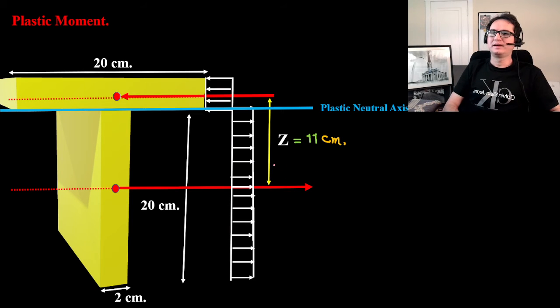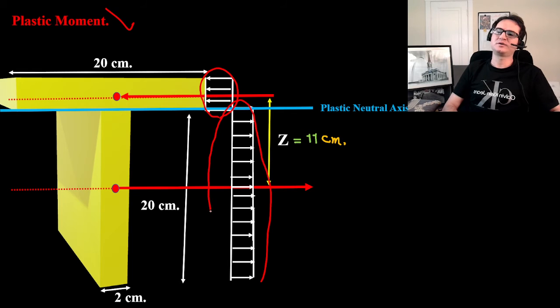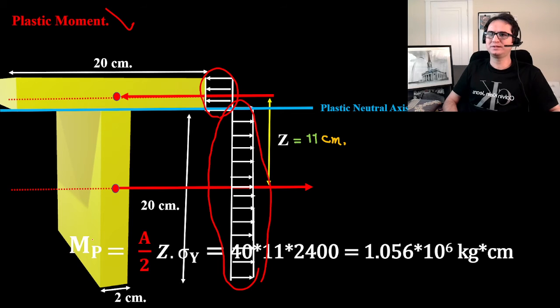And finally, for plastic moment calculation, if we want to calculate the plastic moment, that's the distance between the tensile and compressive part. That's A/2 times z, which is 11 centimeters, times sigma y.